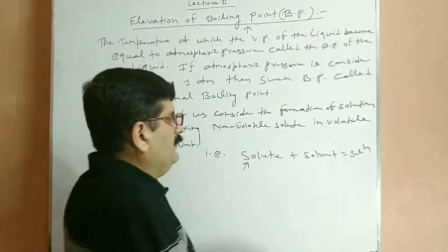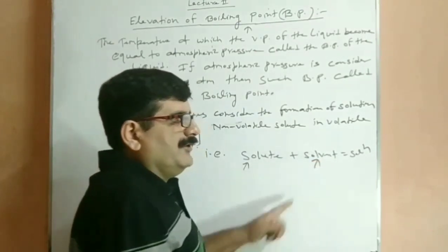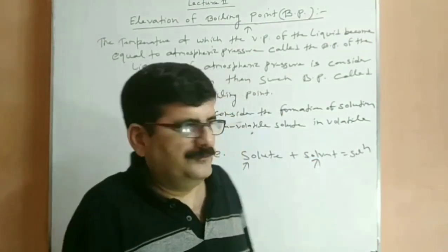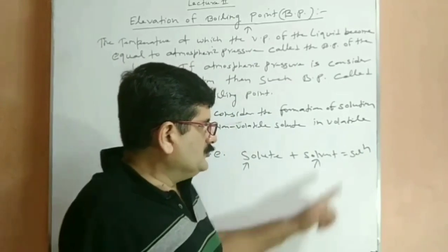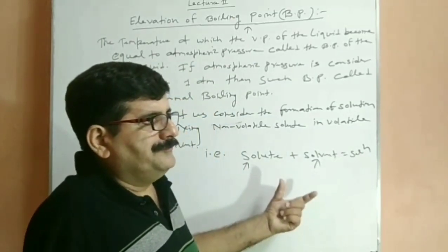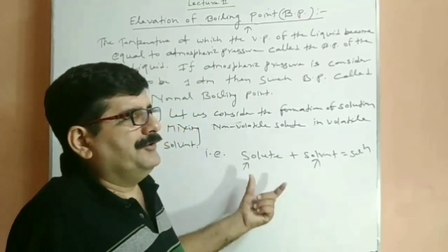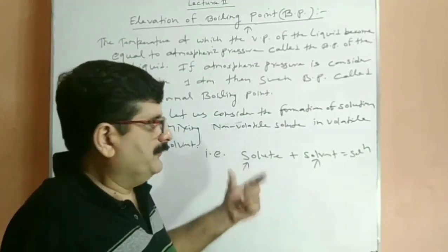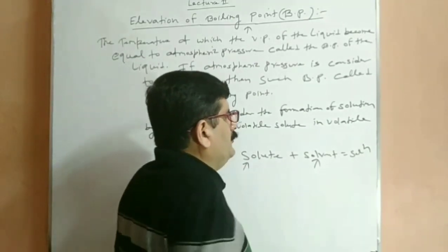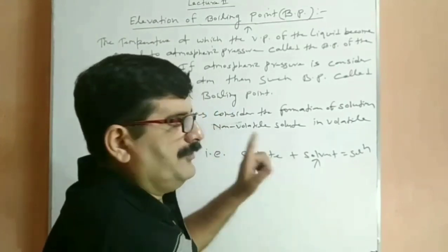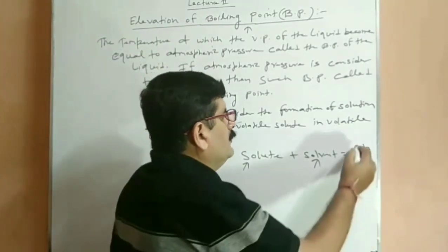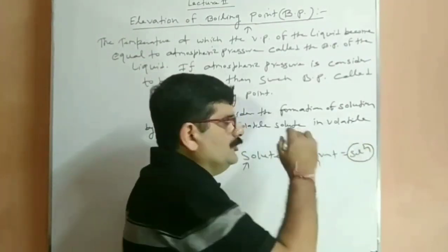Whereas the solvent is liquid, it is always volatile. In solution, two types of boiling point become possible. First, the boiling point of pure solvent, and the second one, the boiling point of solution.